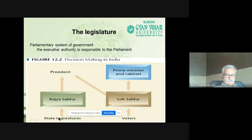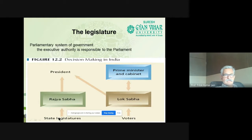Many great people have only been in Rajya Sabha — for example, Manmohan Singh remained in Rajya Sabha for a long time. Generally, those who are very intellectual and erudite come through Rajya Sabha. In the recent reshuffling of the cabinet, a few ministers have come from Rajya Sabha.